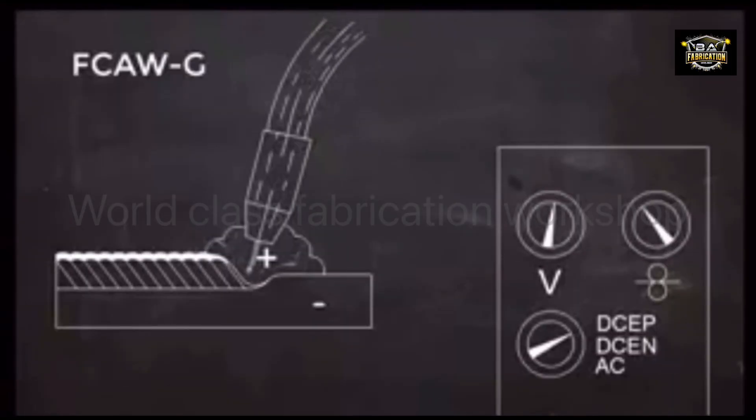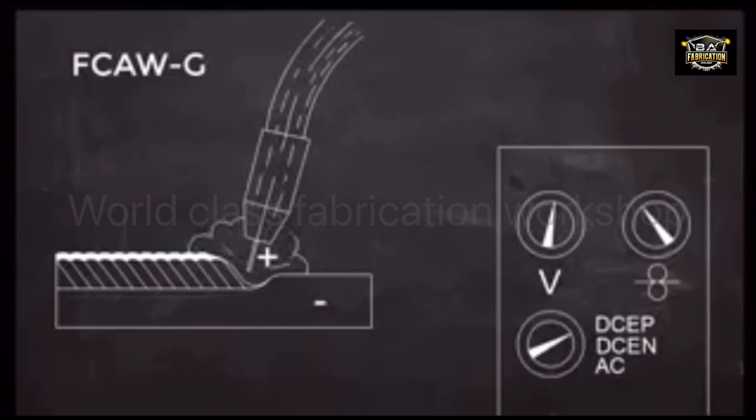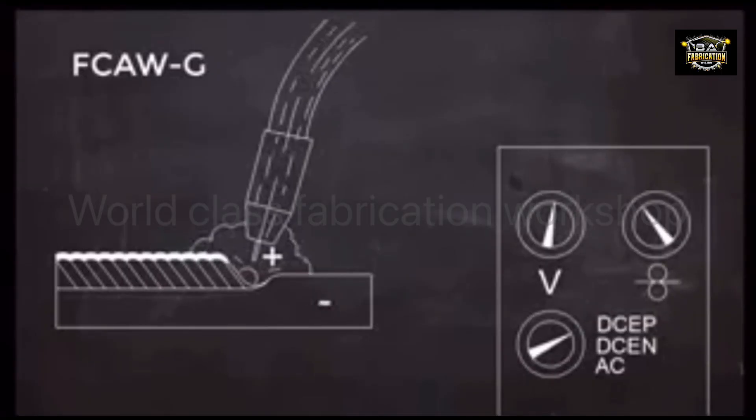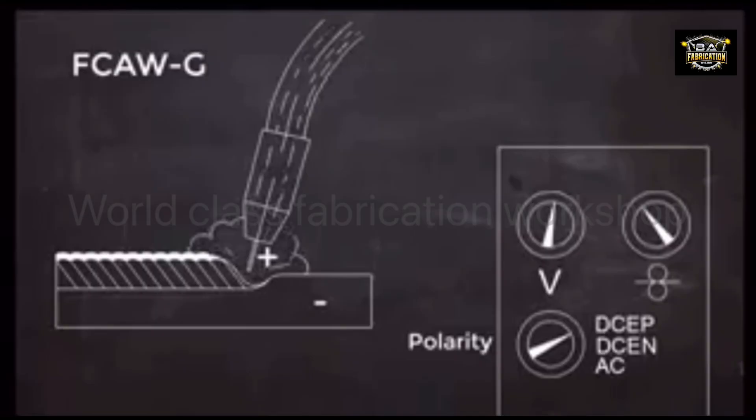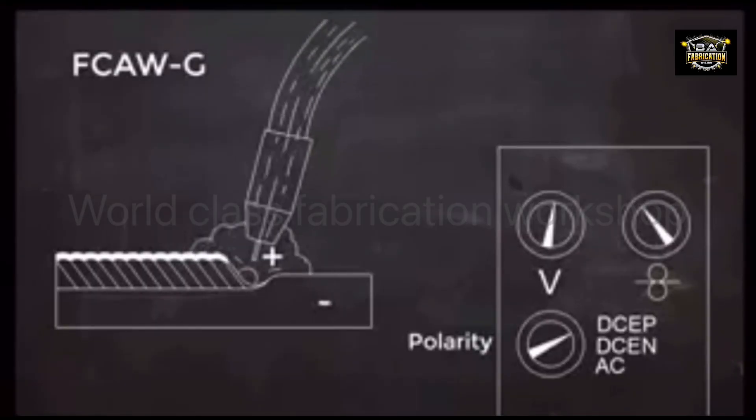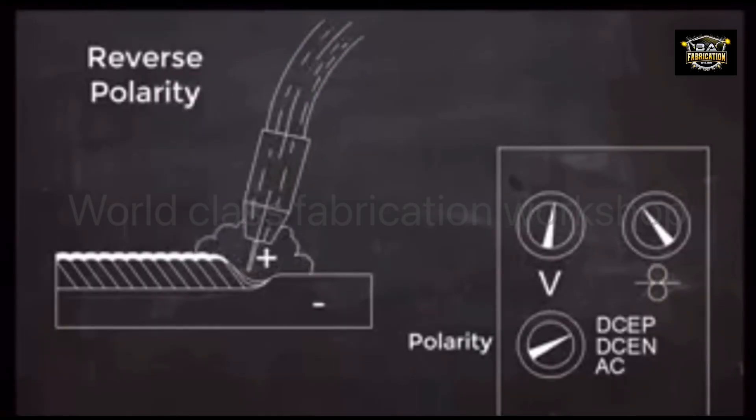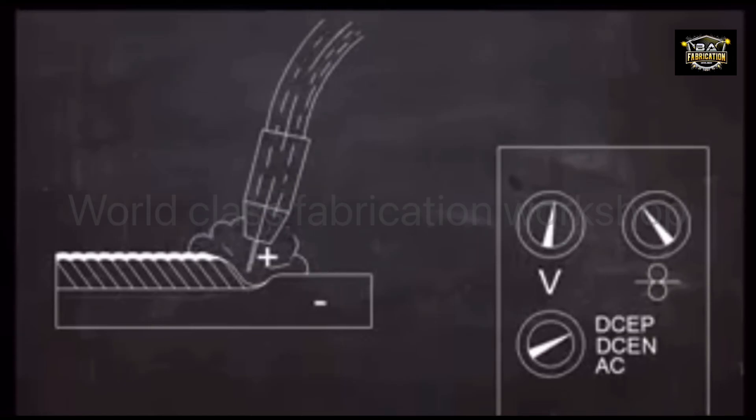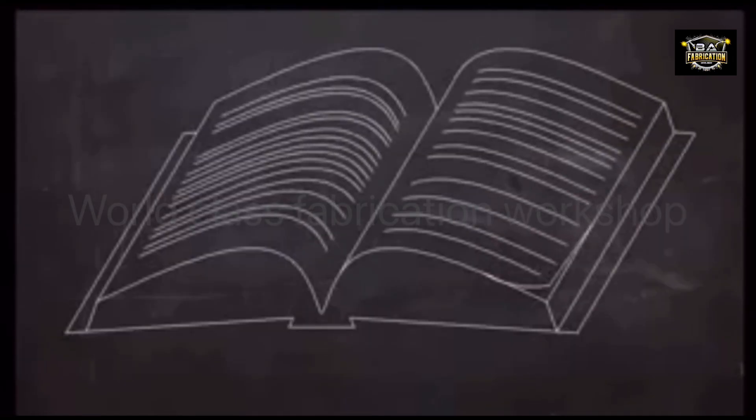In gas-shielded flux-core welding, the electrode is usually positive and the workpiece negative. The term for this is DCEP, indicating that the current is DC and the electrode is positive. This is also called reverse polarity, but DCEP is a more descriptive term. Keep in mind that these are the most common settings, and always check your manufacturer's recommendations.